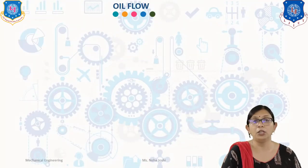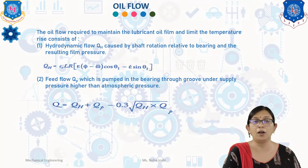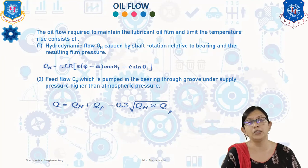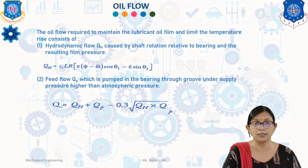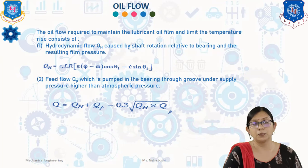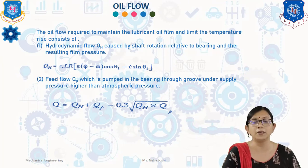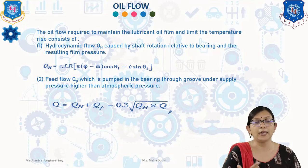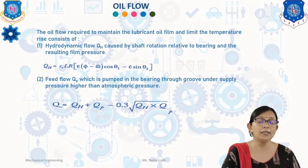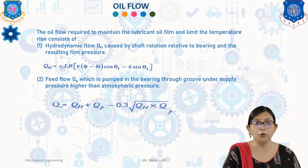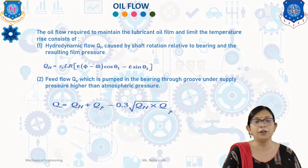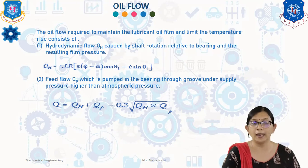Now we will discuss oil flow in squeeze film lubrication. Oil flow is required to maintain the lubricant film and limit the temperature rise. There are two types: hydrodynamic flow QH, caused by shaft rotation, given by QH = Cr·L·R·(ε̇ − ω₁·cos θ₁) · (1 − ε̇·sin θ₁); and feed flow QP, pumped through a groove under supply pressure higher than atmospheric. Total flow: Q = QH + QP − 0.3√(QH·QP).